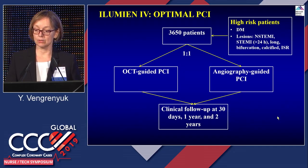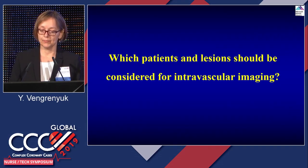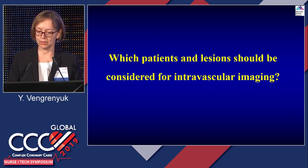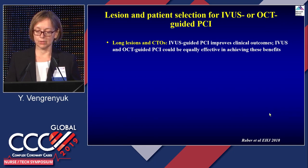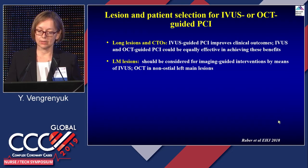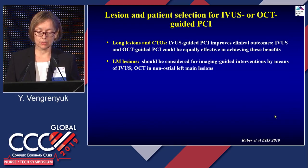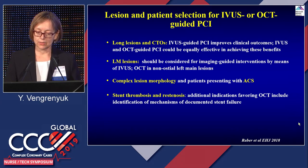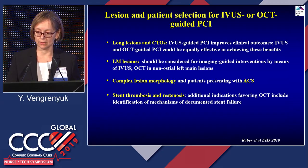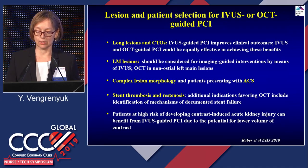Based on current clinical evidence, which patients and lesions should be considered for intravascular imaging? Patients with long lesions and CTOs — IVUS-guided PCI improves clinical outcomes, but either OCT or IVUS can be used equally effectively. Patients with left main lesions should mostly be considered for IVUS-guided intervention; OCT can still be used in non-ostial left main lesions. Patients with complex lesion morphology and those presenting with acute coronary syndrome are also strong candidates. Stent thrombosis and restenosis are additional indications favoring OCT for identifying mechanisms of stent failure. Patients at high risk of contrast-induced acute kidney injury benefit more from IVUS than OCT.